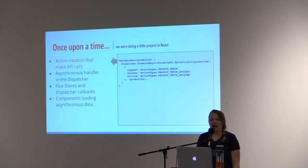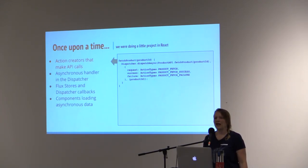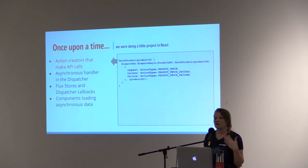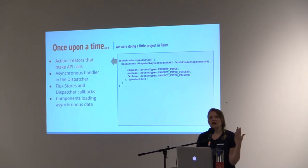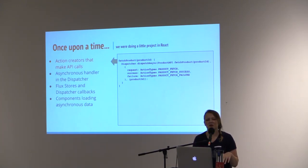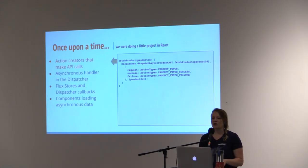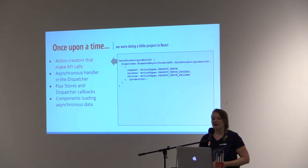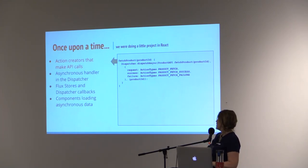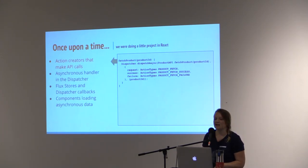We really started scratching our heads about the time we saw what seemed like a lot of debate about where to put the asynchronous actions in Flux. Should API calls be made in the components, the actions, or in the stores? If the Flux store is to be deterministic, API calls don't belong in there. We did some research and decided to go with a solid example by Dan Abramov, then dove in head first. We wrote action creators that make API calls and provide success and failure actions to be dispatched as a result.